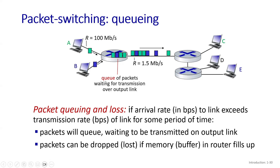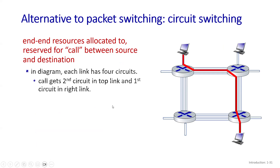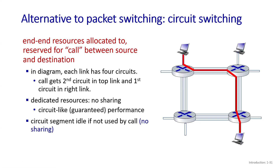When the router's buffer is full, packets might be lost or dropped. This is another issue in packet switching — queues can build up and packet loss can also occur. As an alternative to packet switching, we have circuit switching. The difference is that in circuit switching, the resources are pre-allocated or allocated to users in advance.